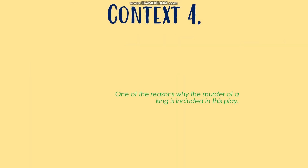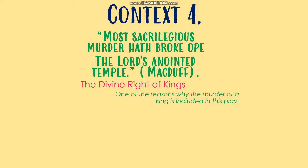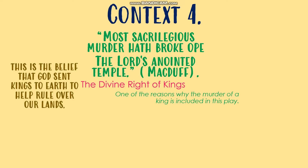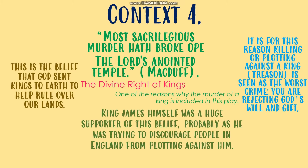Context piece number four is the main reason why the murder of a king is included in the play — the belief in the divine right of kings. Macduff says that the murder of a king is sacrilegious, because there was a belief that God sent kings to earth to rule over our lands. This is why even nowadays treason is seen as the most serious of crimes — you're essentially rejecting God's will. King James I, being unpopular in England, was a huge supporter of this belief, likely because he wanted his people to believe it so he was protected from plots against him.